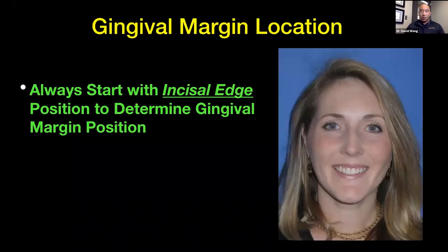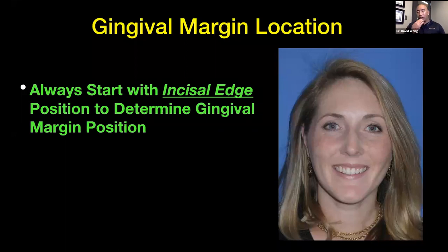Let's go over the basics of smile design. The first thing we always have to look at is where the incisal edge is in relation to the smile, specifically the lips. There are a couple of different ways to determine where the incisal edge should be. One common way is to say that the incisal edge should hit the wet-dry border of the lower lip — if you have the patient say an F sound, the incisal edge will hit that wet-dry border.